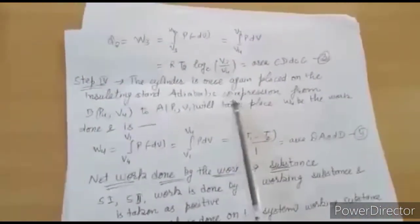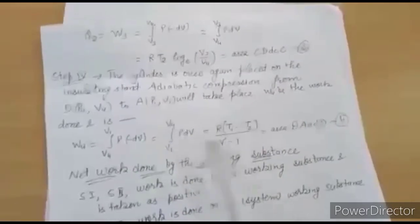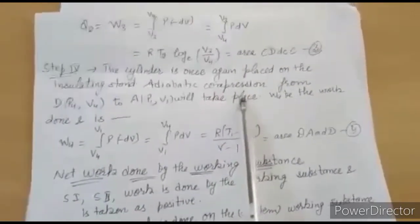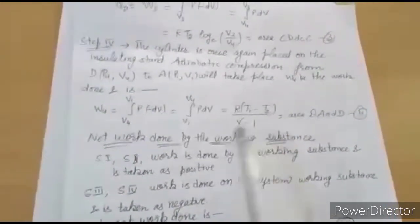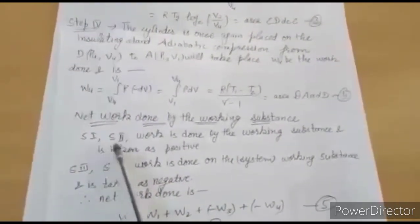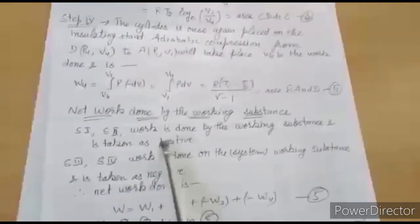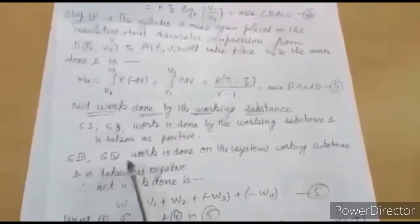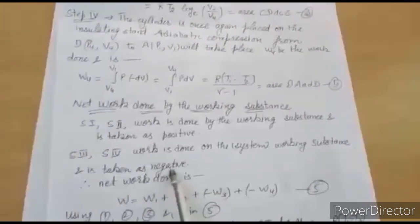In the fourth step, the cylinder is again placed on the insulating stand — adiabatic compression takes place from D to A. There is no contact with surroundings, so the work done follows the same adiabatic formula. Steps 1 and 2 involve expansion — work done by the system, taken as positive. Steps 3 and 4 involve compression — work done on the system, taken as negative.